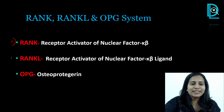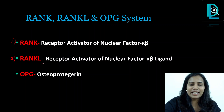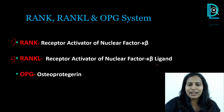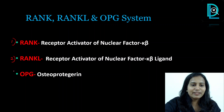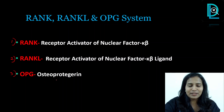The second and third are ligands for RANK. The second one is RANK-L, that is Receptor Activator of Nuclear Factor Kappa B Ligand, and the third one is OPG, which stands for osteoprotegerin.